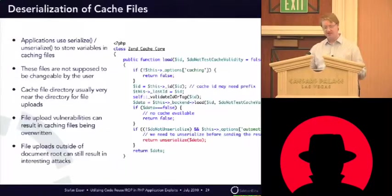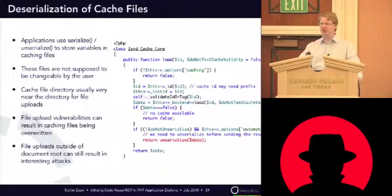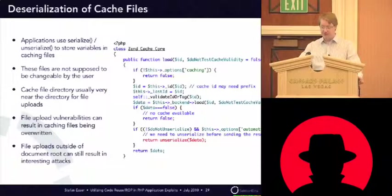The next thing you would see in modern PHP applications is that they always use some kind of caching because they're usually too slow, so they cache a lot in memory, in the database, or in files. Files are still the most often used thing to store big data arrays, so you will see that a lot of PHP applications store serialized data in files.